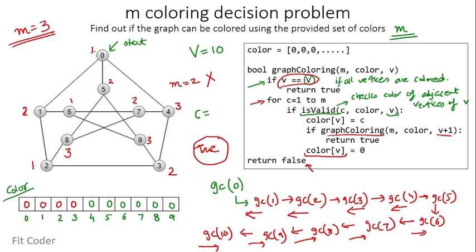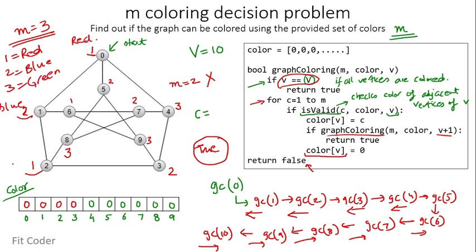The color assignments are: vertex 0 is colored 1, vertex 1 is colored 2, vertex 2 is colored 1. The numbers 1, 2, 3 are just notation — if we map 1 to red, 2 to blue, and 3 to green, we get one of the valid possible colorings that can be assigned to the graph.